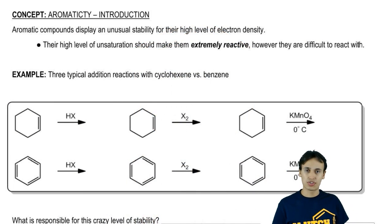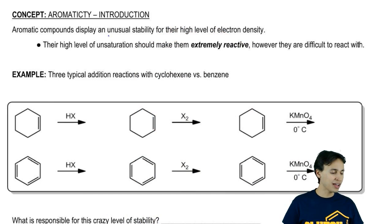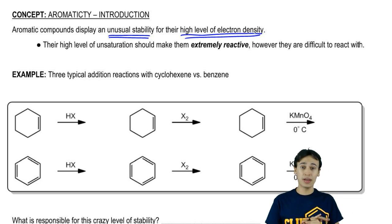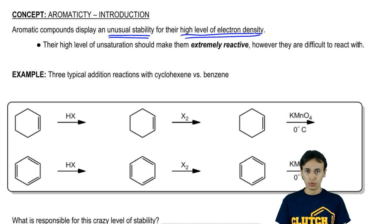Aromatic compounds are compounds that have a really high level of stability relative to their high electron density. It turns out that aromatic compounds have their own set of rules that will help us to determine if something is aromatic or not. But for right now, we can generalize to just say that aromatic compounds are molecules that have a lot of double bonds within rings.